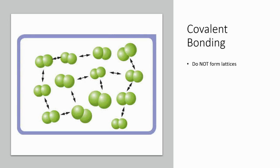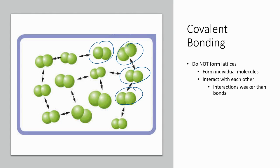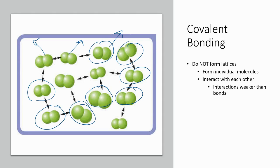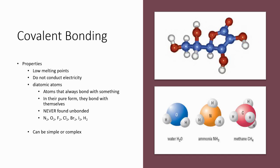Covalent molecules do not form lattices. They form individual molecules that are not bonded to each other. They may interact with weaker forces of attraction, but the individual molecules remain separate. This is why it's easy to melt them — in order to pull one molecule away from another, we only have to overcome these weak interactions, not strong bonds. Therefore, covalent molecules tend to have very low melting points. They also do not conduct electricity very well because there are no positive and negative pieces to them — these are all neutral atoms sharing electrons.